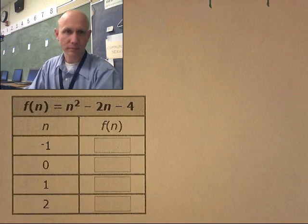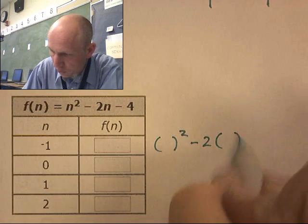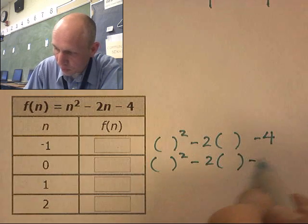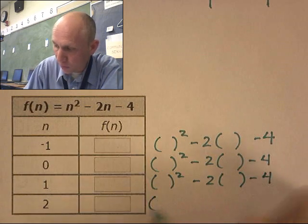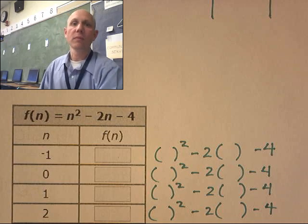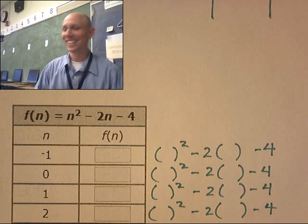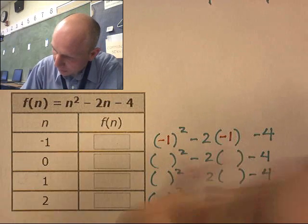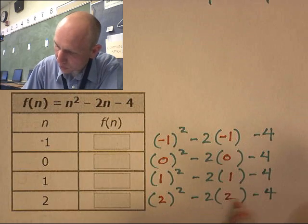Here's another one. The function is: parenthesis squared minus 2 times parenthesis minus 4. We fill in x values of negative 1, 0, 1, and 2 for each term in the expression.